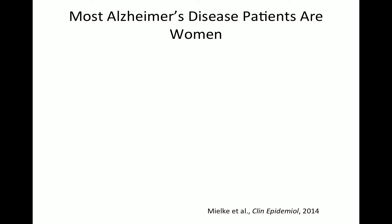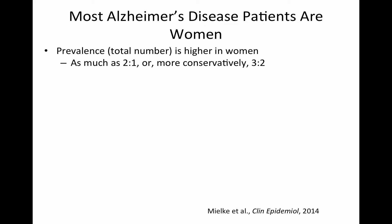Most Alzheimer's disease patients are women, but this can be analyzed in a couple of different ways. Prevalence — the total number of people that have something — is greater in women than men. Estimates vary: the less conservative suggests a two-to-one ratio, but I think more realistically three-to-two, and certainly there's a big difference in terms of prevalence.